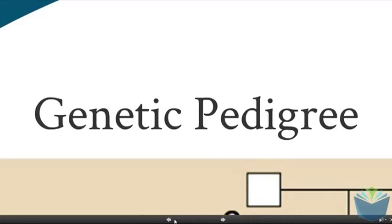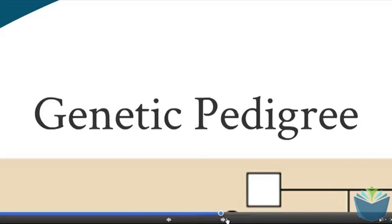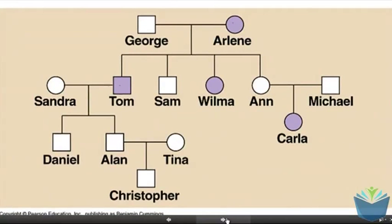Hi, and welcome to my fifth video in this series about mutations and disease. Today we're going to look at some genetic pedigree diagrams. On a genetic pedigree diagram, you can see how different characteristics are passed from each generation to the next. What you have here is a family tree, with the oldest people at the top and their offspring on a line joined directly to them.